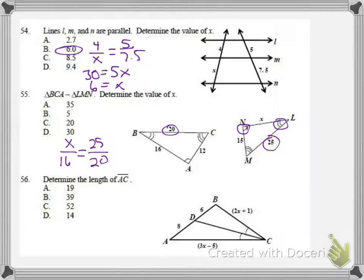I can reduce these. 25 over 20 is 5 over 4. So I'm now left with X over 16 equals 5 over 4. Cross product gives me 80 equals 4X, so X equals 20, or answer C.